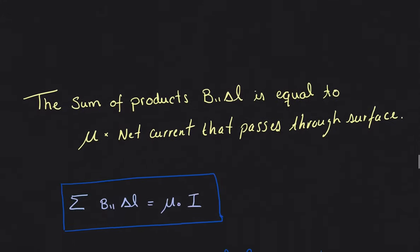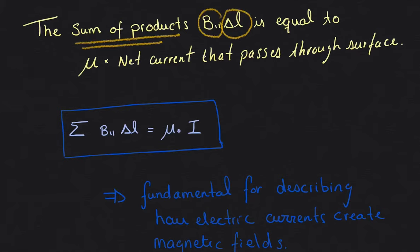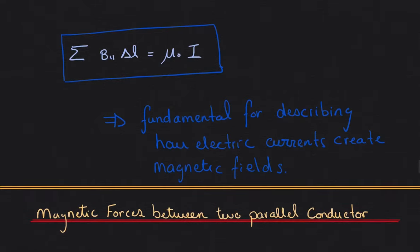I'm going to briefly introduce Ampere's Law so I can go to the application of the levitating wire. Ampere's Law states that the sum of the products of B parallel times a length segment ΔL is equal to μ₀ times the net current passing through the surface. This equation — the sum of B∥ΔL = μ₀I — is fundamental for describing how electric currents create magnetic fields.